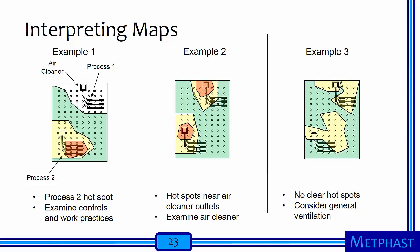Such maps can yield extremely useful information. In the example on the left, a red hotspot is observed at process 2, and the best course of action is to examine the controls and workplace practices in this area — workers at the two processes would be grouped into different SEGs. In the middle example, hotspots are observed at the exhaust of the air cleaners, indicating that attention should be paid to evaluate the air cleaner. In the third example at right, there are no clear hotspots, and general exhaust ventilation should be considered to lower concentrations throughout the facility.